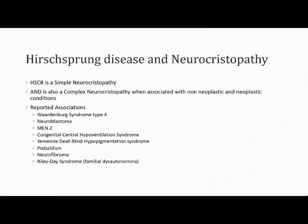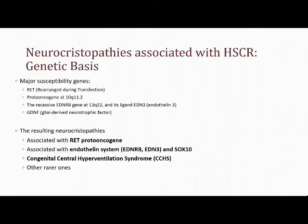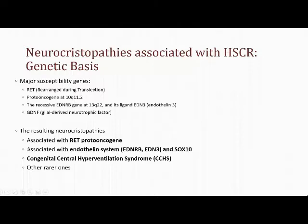Hirschsprung disease is a simple neurochristopathy by definition but becomes a complex neurochristopathy when associated with neoplastic or non-neoplastic conditions. Reported associations include Waardenburg syndrome type 4 (Shah-Waardenburg syndrome), neuroblastoma, MEN 2 syndrome, congenital central hypoventilation syndrome, Yemenite deaf-blind hypopigmentation syndrome, piebaldism, and neurofibromatosis-related syndromes. The major susceptibility genes are the RET proto-oncogene at 10q11.2, the EDNRB gene at 13q, its ligand endothelin-3, and glial-derived neurotrophic factor (GDNF).